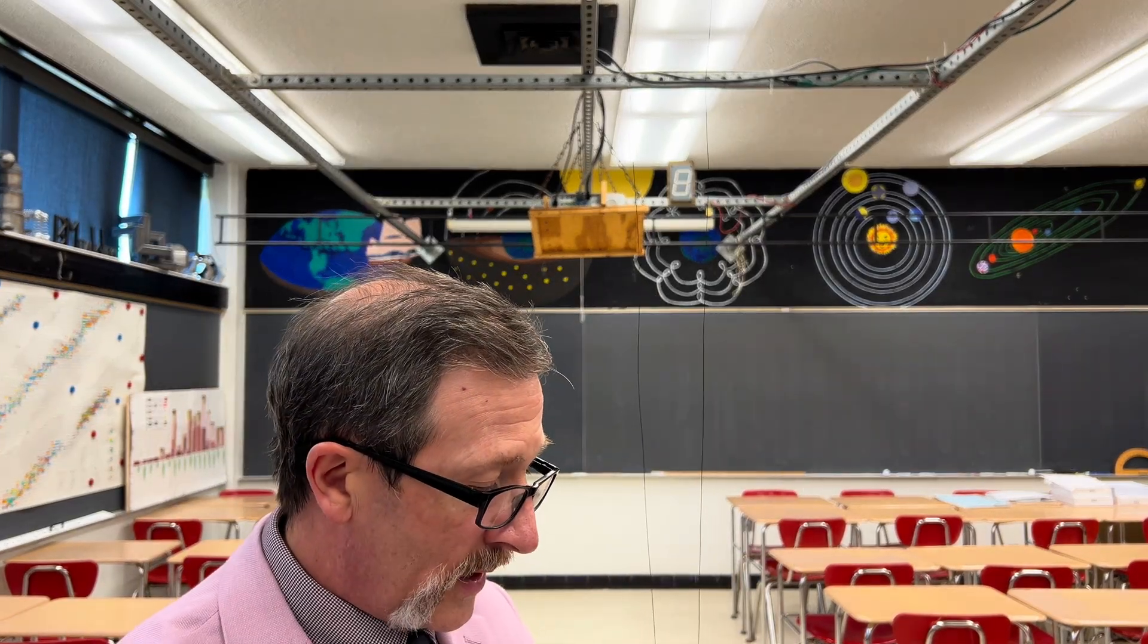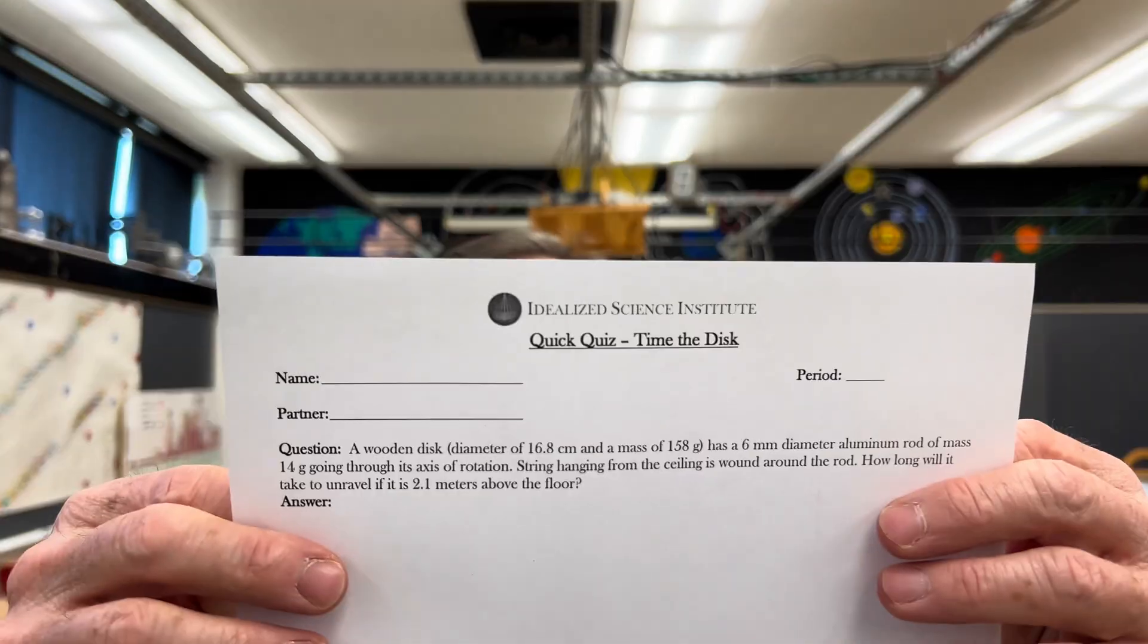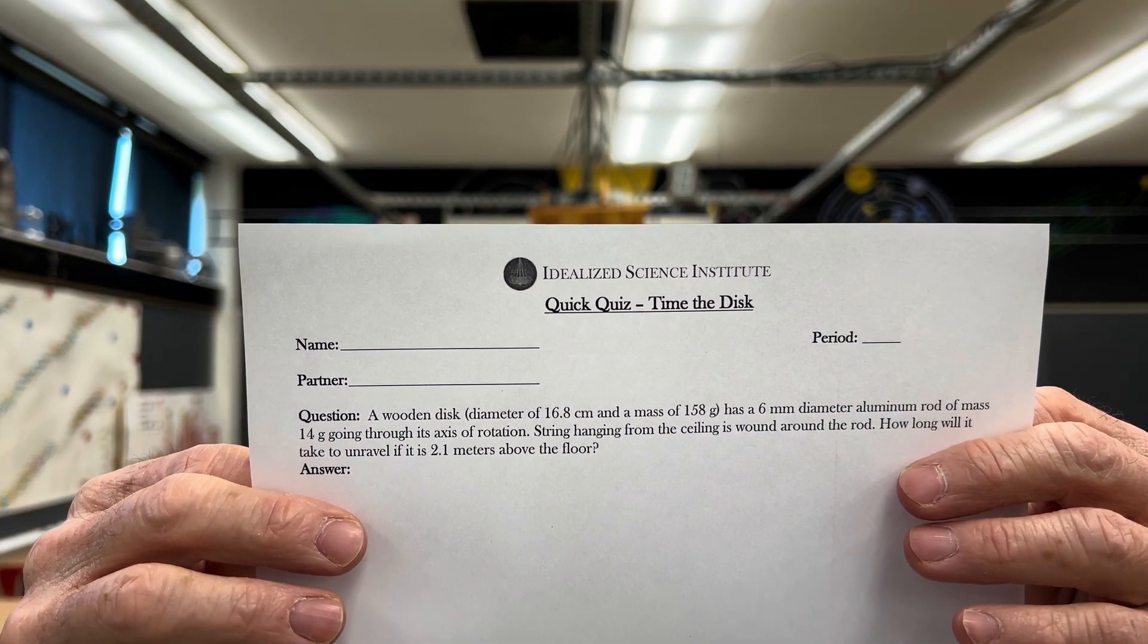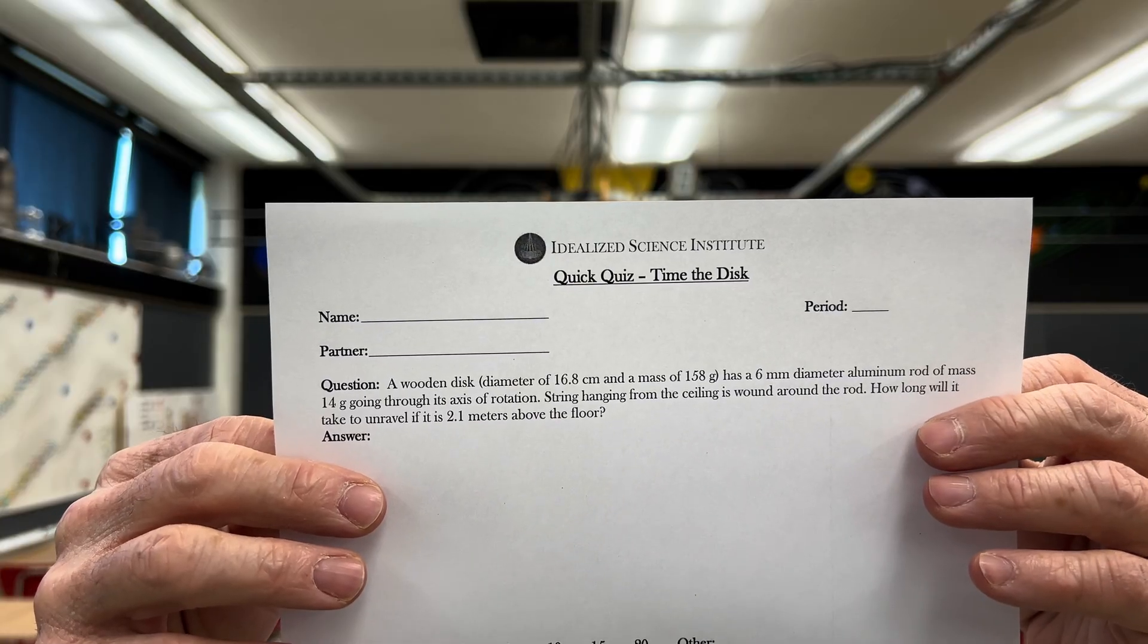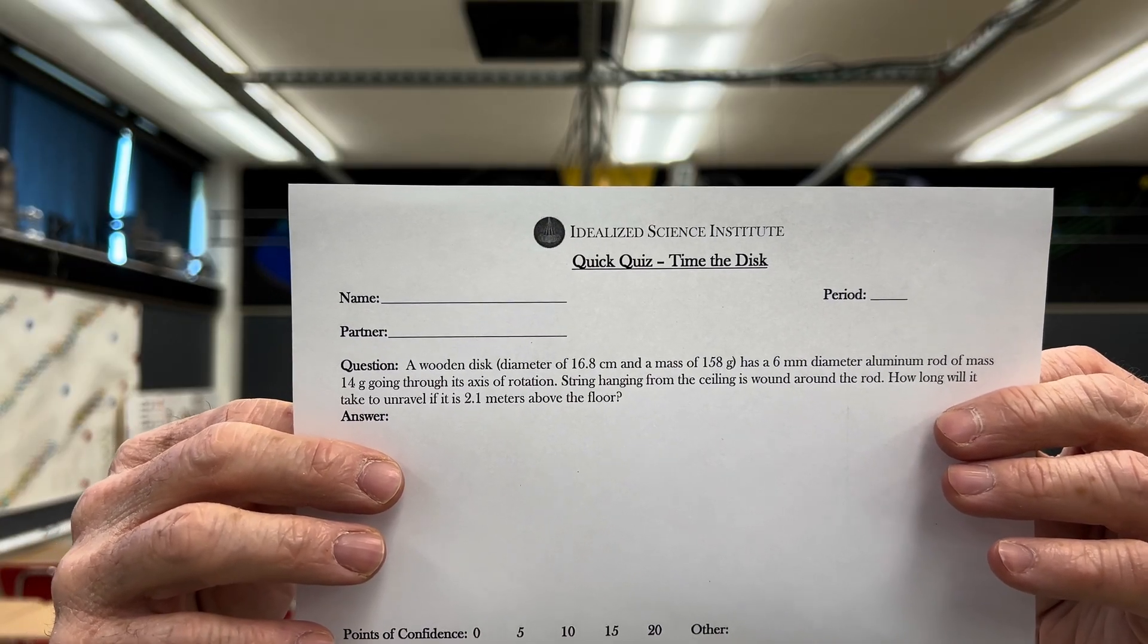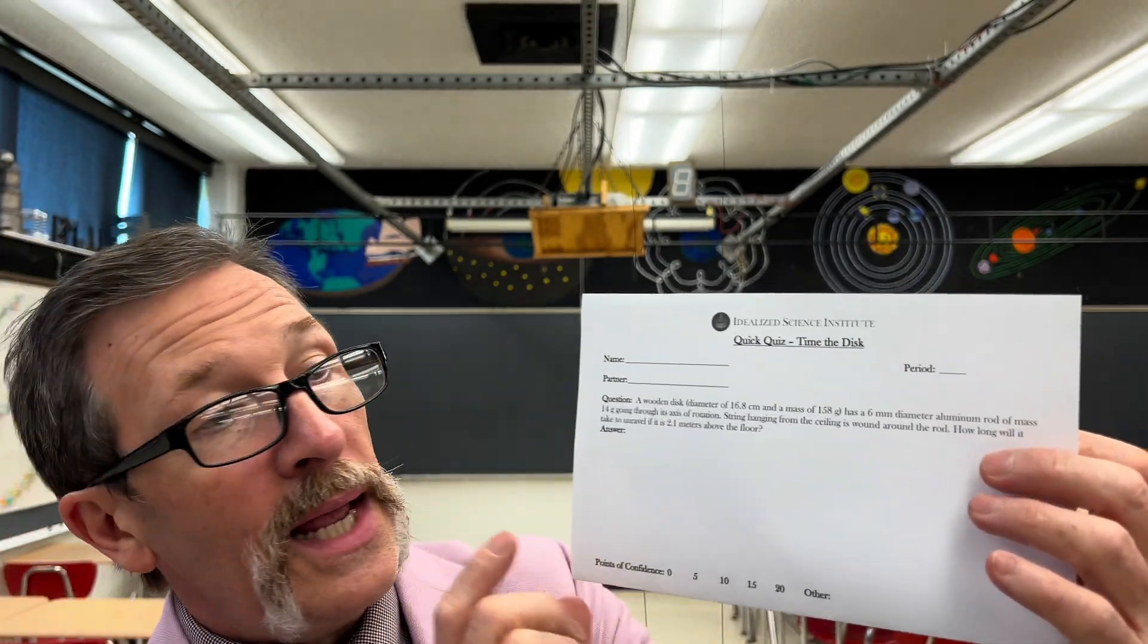Let me hold up your quiz right now and it gives you some values for the rod and the disc. The rod is 16.8 centimeters and it has 158 grams, where the aluminum rod is six millimeters and is 14 grams. As always, mark your answer as completely as possible and list your level of confidence.